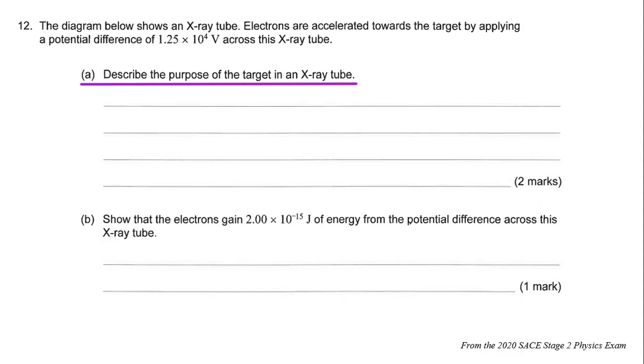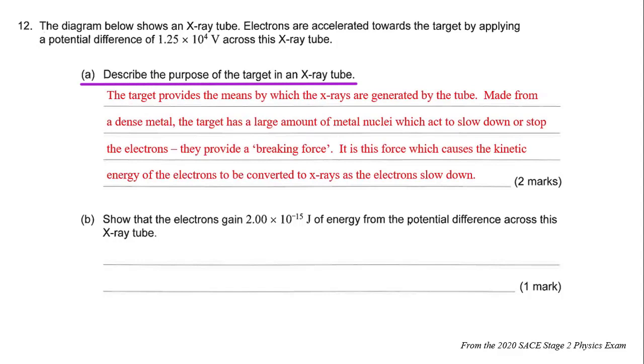Here's an answer I provided: The target provides the means by which the X-rays are generated by the tube. Made from a dense metal, the target has a large amount of metal nuclei which act to slow down or stop the electrons. They provide a breaking force. It is this force which causes the kinetic energy of the electrons to be converted into X-rays as the electrons slow down.